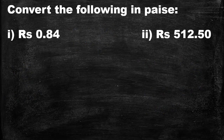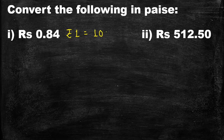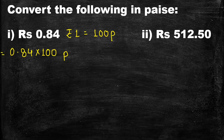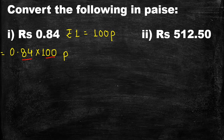In the next question, we have to convert the following into paise. We know that 1 rupee equals 100 paise, so to convert rupees into paise we multiply by 100. Here 0.84 rupees are given, so 0.84 rupees will be equal to 0.84 multiplied by 100 paise. Two digits are after the decimal in 0.84, and two zeros are in 100, so the decimal shifts two places to the right and gets eliminated. Therefore, 0.84 multiplied by 100 gives 84 paise.